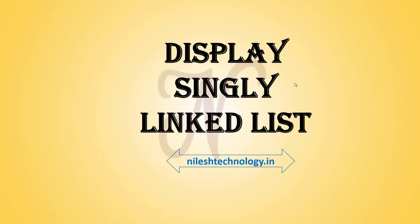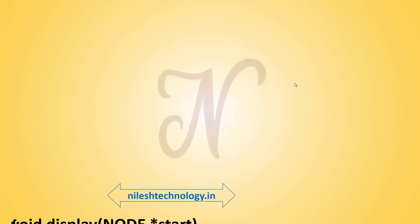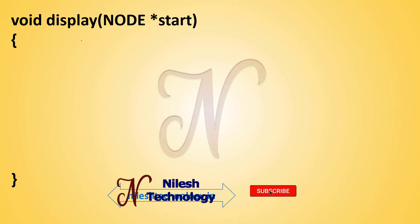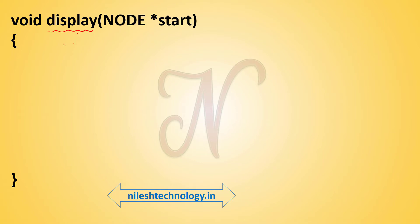Hey learner, this is Nilesh Borate. In the previous section we saw how to create a structure, how to create a single node, and how to create a complete linked list. Now here we print the complete linked list. My function name is 'display'. Here we only display the total linked list, so there is no return type — return type is void, because here we cannot return the linked list, just display all the data of a node. There is one parameter: 'start', meaning the total linked list is passed in as a parameter.